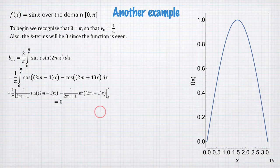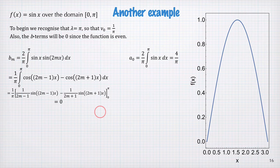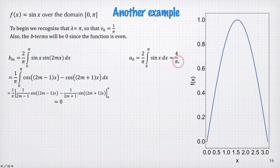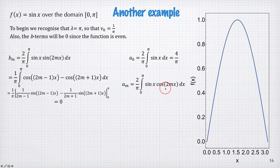That's the uninteresting b terms. What about the interesting a terms? Well, as I foreshadowed, there will be an offset. We find that a₀ is 4 divided by π, and aₘ is given by this integral here, and we compute that.